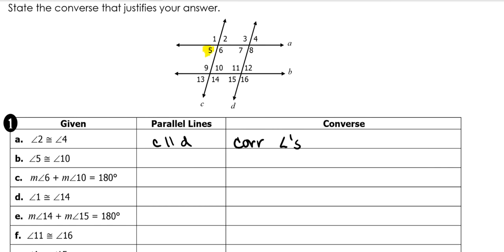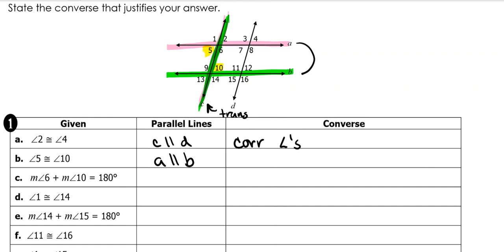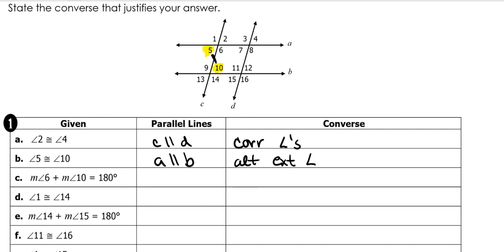Angles 5 and 10: angle 5 is made out of this line and this one — that's what makes angle 5. Angle 10 is made out of this one and this one. Where they overlap is the transversal, which means A is parallel to B. Those angles are on the inside and across from each other — I need to correct myself: 5 and 10 are on the inside, not exterior. So that is alternate interior angles.